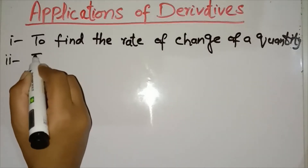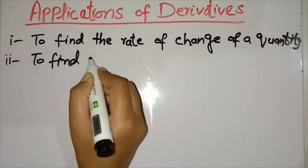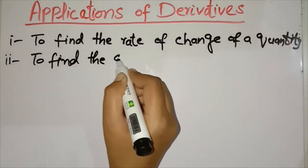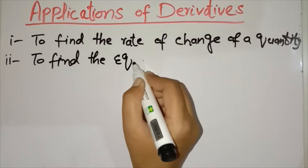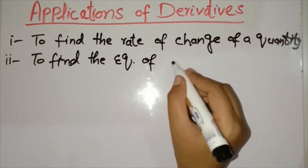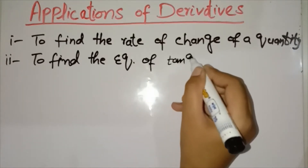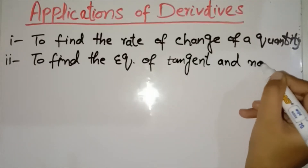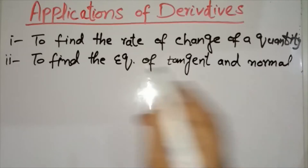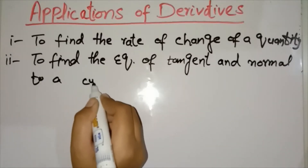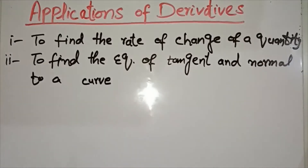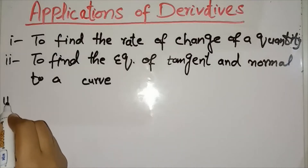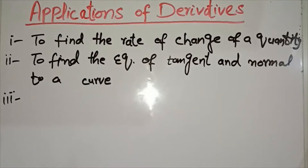We use derivatives to find the equation of a tangent and normal to a curve. To find the equation of a tangent or normal equation, we find the derivative of the curve.